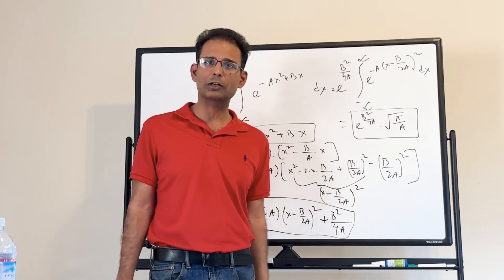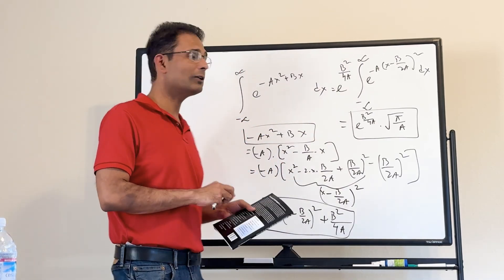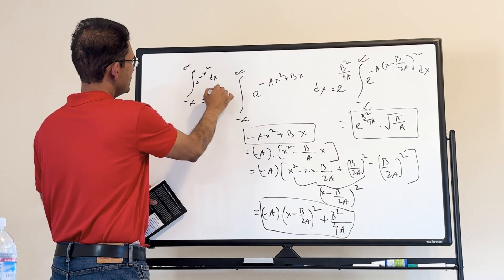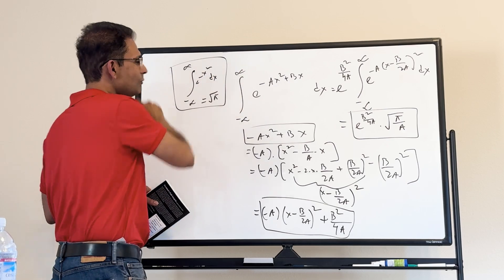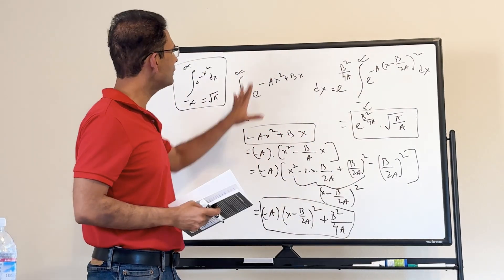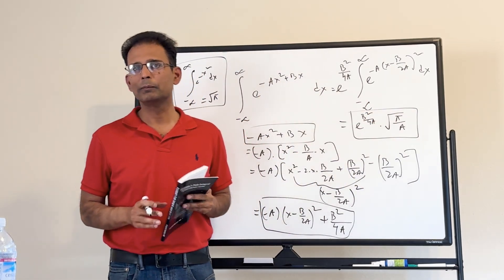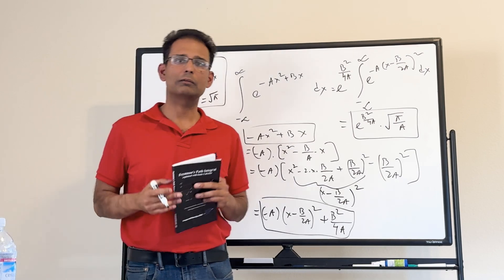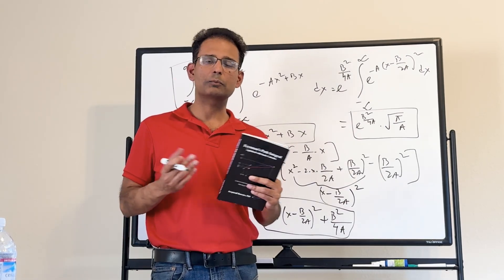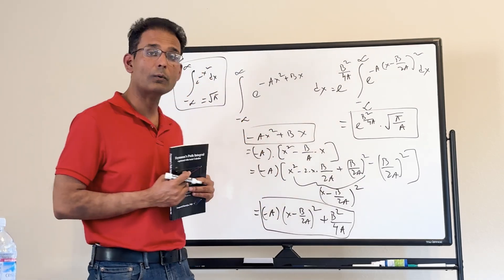It uses eighth grade algebra and very basic integral calculus. If you're willing to accept that the integral of e to the minus x squared dx from minus infinity to plus infinity equals square root of pi, then proving this general Gaussian integral result is not hard and doesn't require any more advanced mathematics than basic calculus and completing the square.